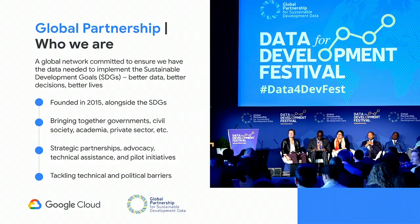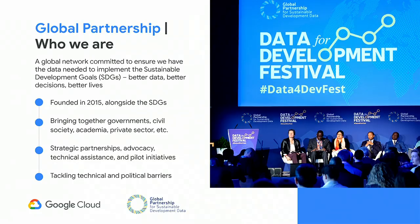That's where the work of the Global Partnership comes in. The Global Partnership is a global network committed to ensuring we have the necessary data to achieve and monitor the SDGs. Founded in 2015 alongside the Sustainable Development Goals, it brings together governments, civil society, UN agencies, multilaterals, and the private sector to collectively solve the problems and gaps around the production and use of data. Rather than collecting or providing data themselves, the partnership provides strategic partnerships, advocacy, technical assistance, and pilot tests for partners at the national, regional, and global level, as well as offline and online spaces for partners to tackle specific challenges.